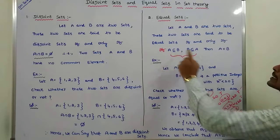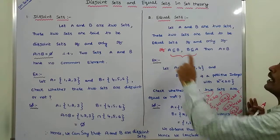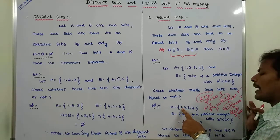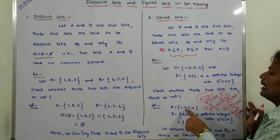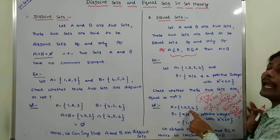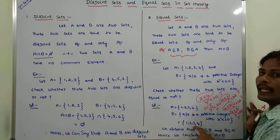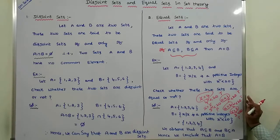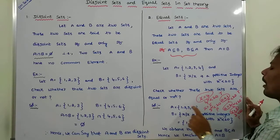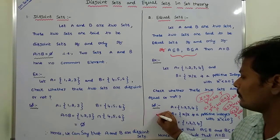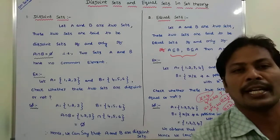Now we have to check two conditions. First, A ⊆ B: every element of set A must also be an element of set B. In set A, element 1 is there; in set B, element 1 is also there. Element 2 is in A and in B. Element 3 is in A and in B. Element 4 is in A and in B. So every element of set A is also an element of set B. Therefore, the condition A ⊆ B is satisfied.